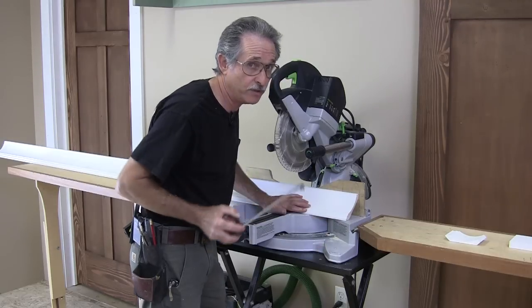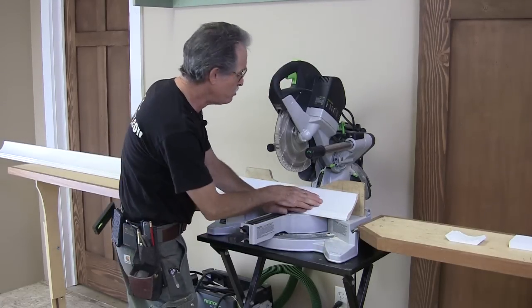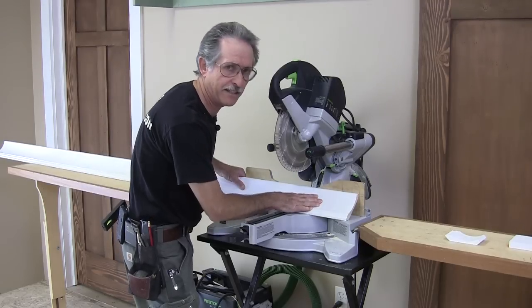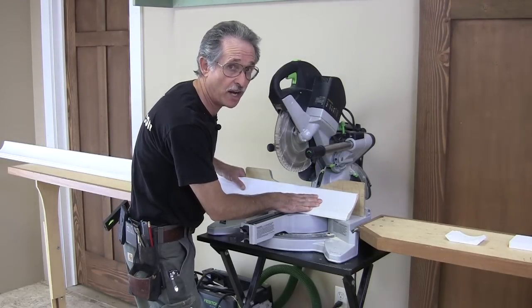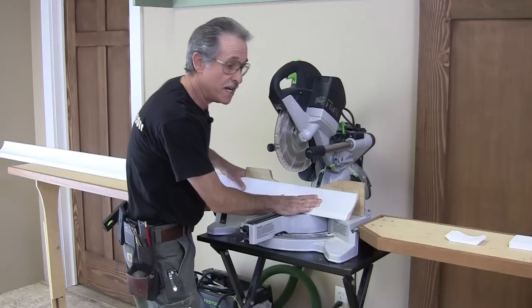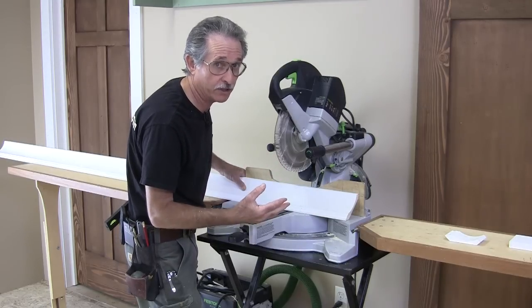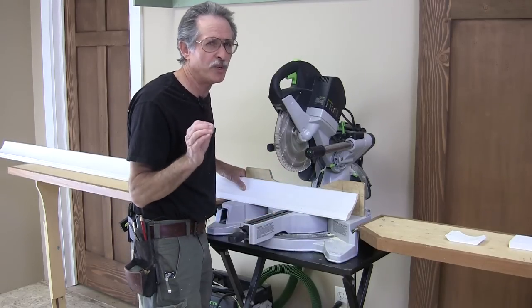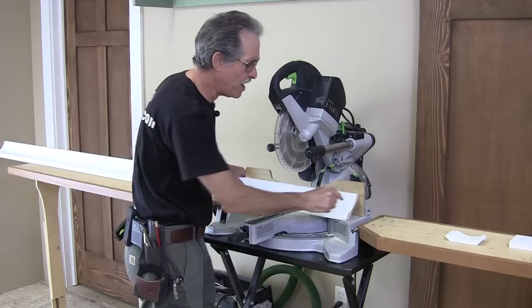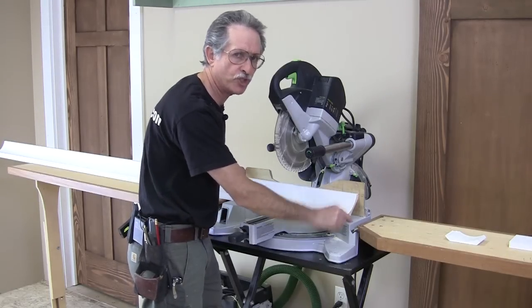That's really a critical measurement. Because when you cut crown, you've got to hold it at exactly that angle every single time for every single cut. That's really the spring angle of the crown we're holding it at. But we don't have to worry about what the exact spring angle is. We just have to maintain the same projection.